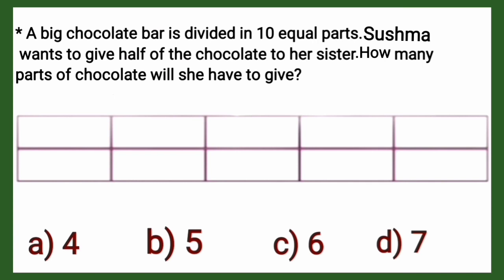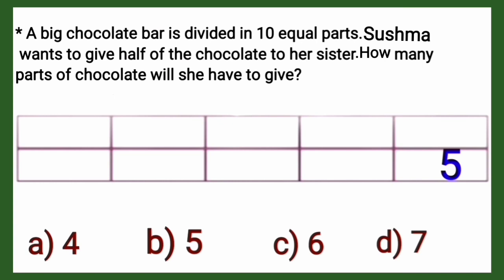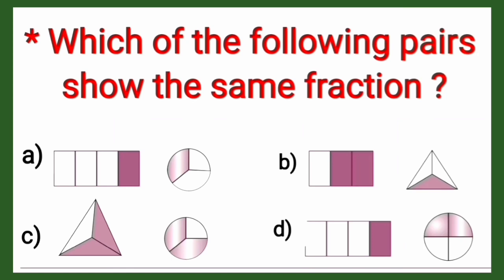We already know that half of 10 is 5, so she will give 5 parts. Option A is 4 — incorrect. Option B is 5 — correct! She will give 5 parts of the chocolate to her sister. Next question: which of the following pairs shows the same fraction?